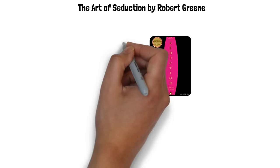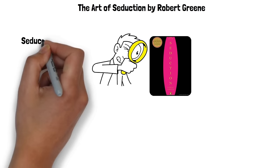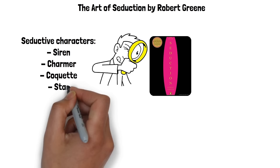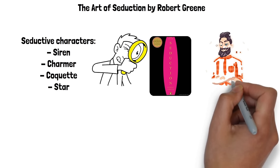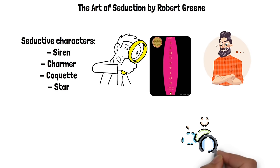The Art of Seduction by Robert Greene offers a deep dive into the world of seduction, not just in the romantic sense, but as a broader form of influence. Greene meticulously breaks down various seductive characters, from the siren to the charmer, the coquette to the star. Each character represents a unique style of allure and persuasion, accompanied by historical examples that bring the traits of these archetypes to life. By exploring these characters, readers can identify patterns in human behavior and understand the motivations behind certain actions.